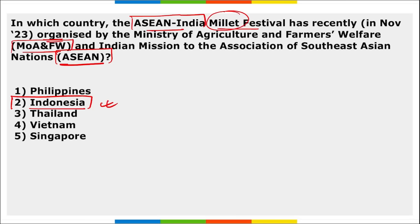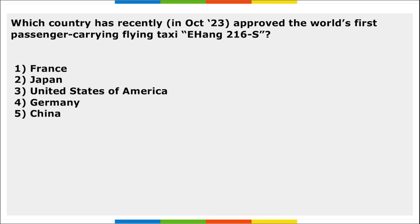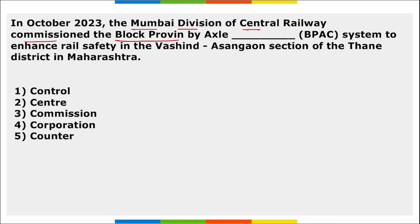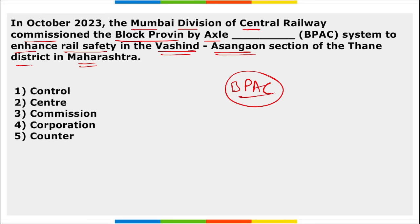Science and technology questions: China recently approved the world's first passenger-carrying flying taxi — eHang 216S. Mumbai Division of Central Railways commissioned the BPAC system — Block Proven by Axle Counter — to enhance rail safety in the Vasind-Asangaon section of Thane district, Maharashtra. This system counts the number of axles of train coaches passing a section, ensuring 100% safety to avoid more than one train between two signals, preventing train collisions.